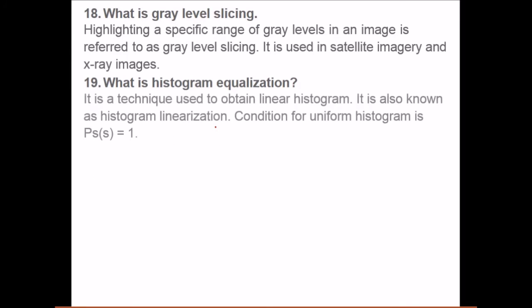What is histogram equalization? It is a technique used to obtain linear histogram, also known as histogram linearization. The condition for a uniform histogram is probability equals 1. We find out the probabilities of all the values, then cumulative frequency. Depending on that, we redistribute the pixels so that the buckets are less and the whole image shows proper equalization.